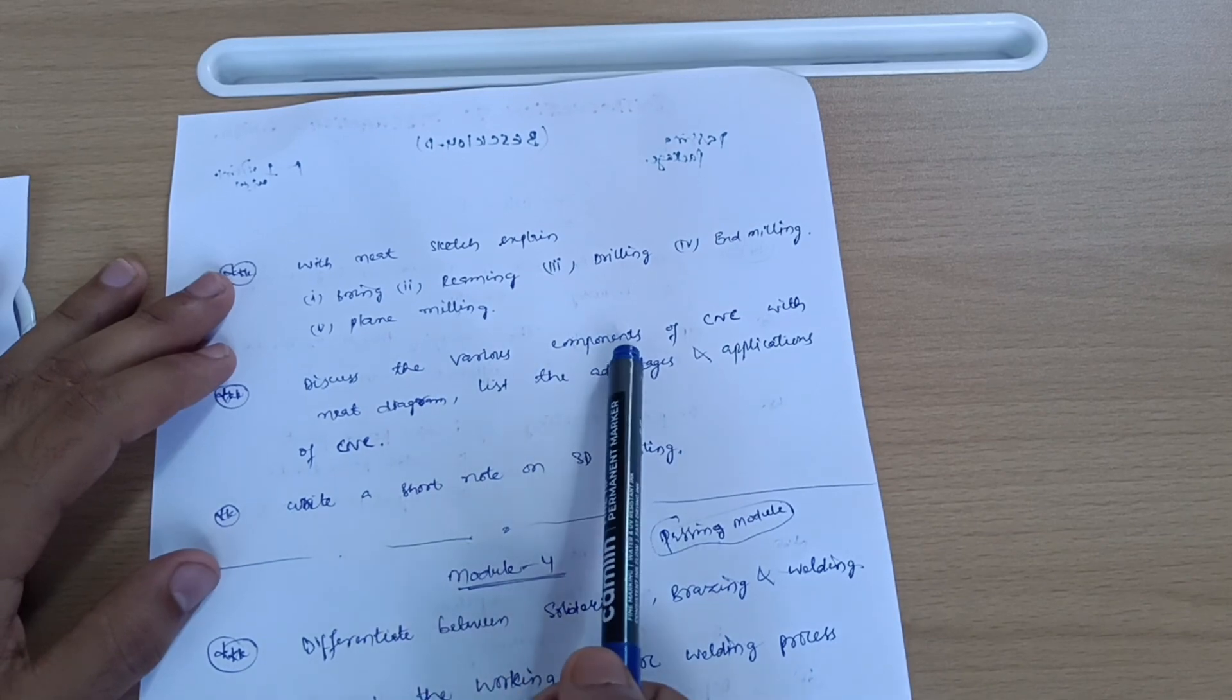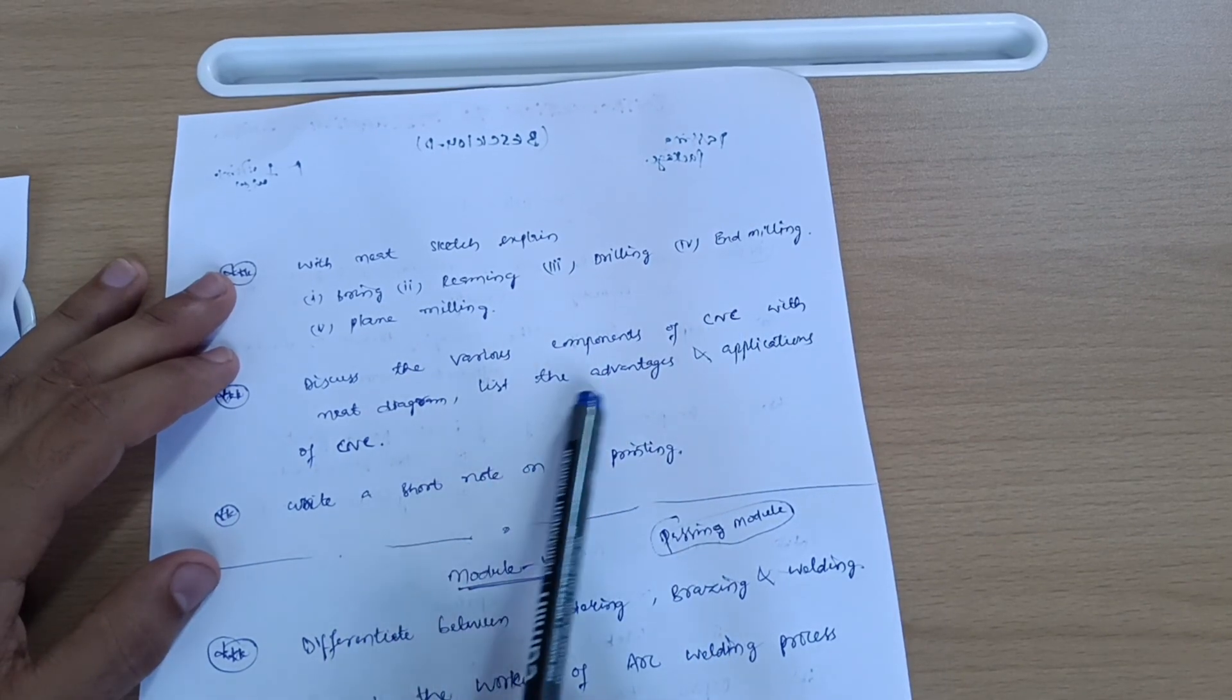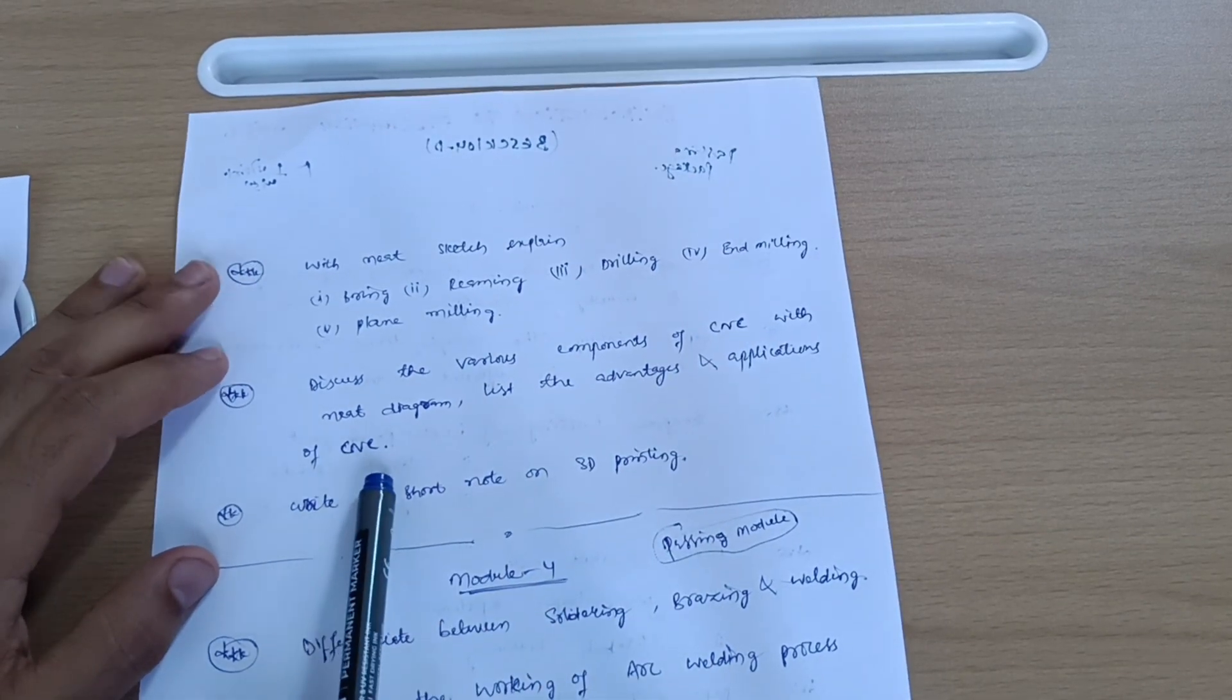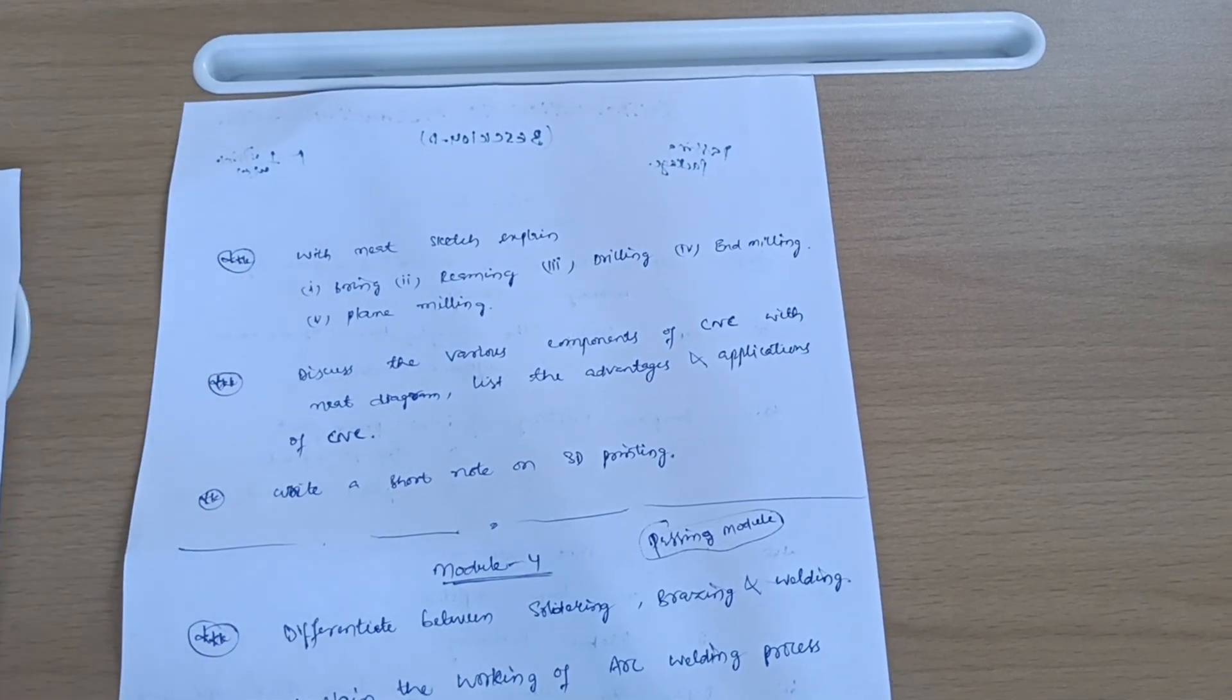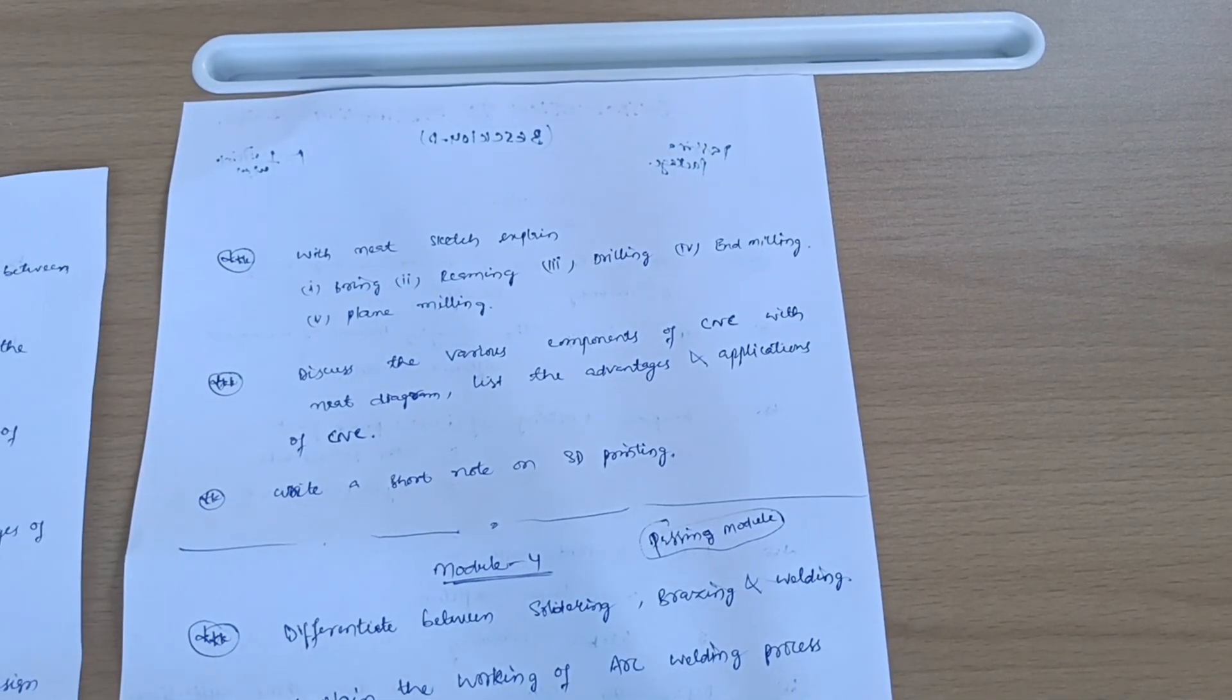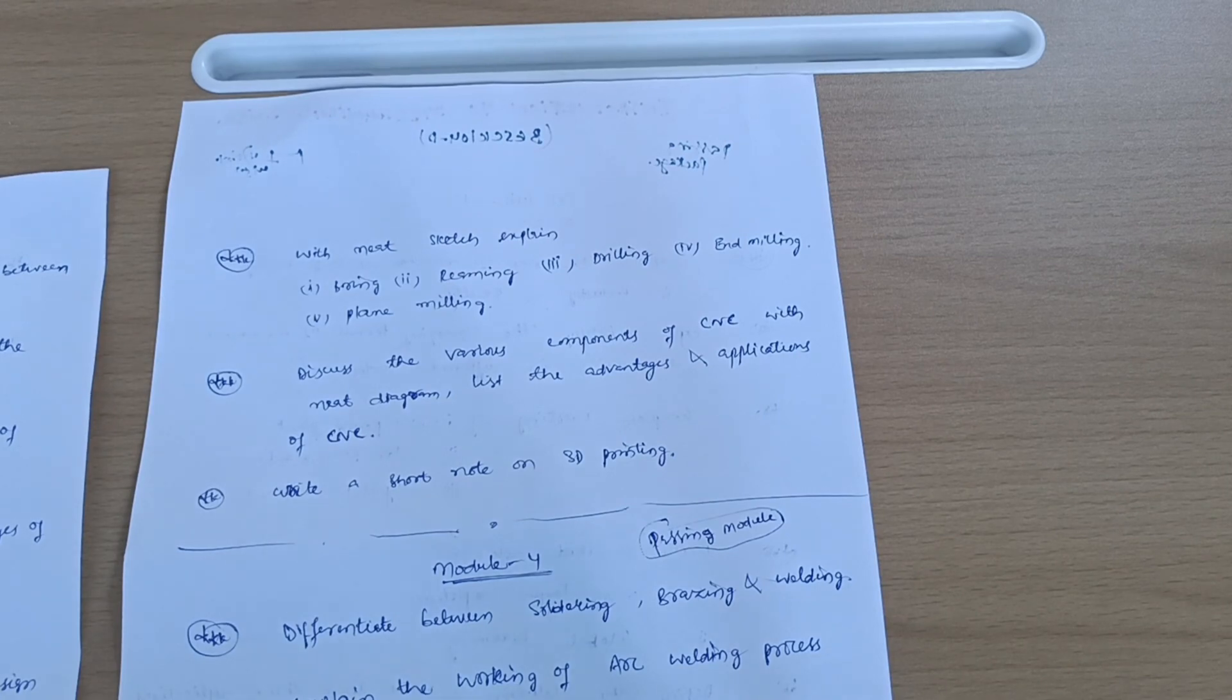Next, discuss the various components of CNC with neat diagram, list the advantages and applications of CNC, and write a short note on 3D printing. Dear friends, try to make the diagrams first in your answer booklet. I am continuously emphasizing that you should draw diagrams first. The first five to eight pages should be neat and this is a diagrammatic subject, so that is an advantage for students.